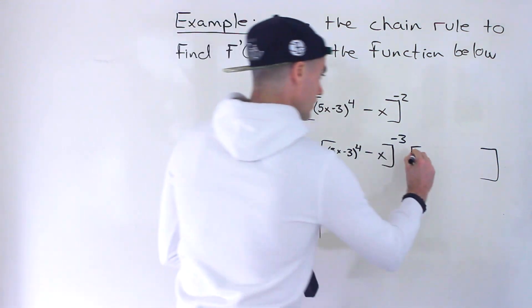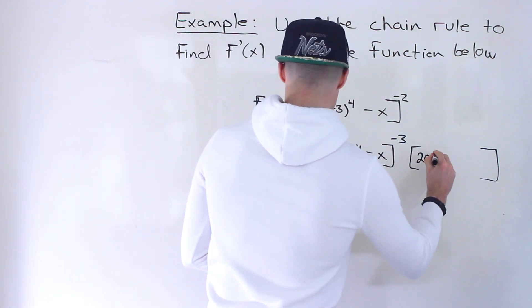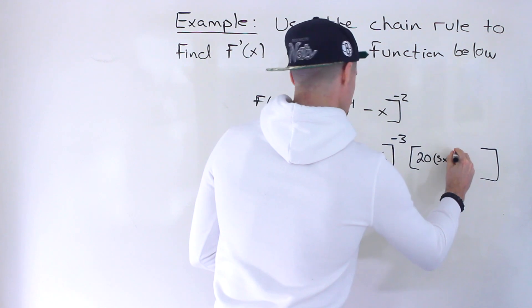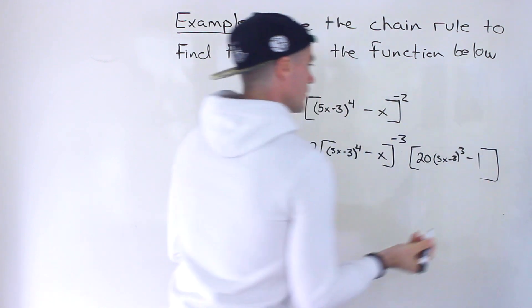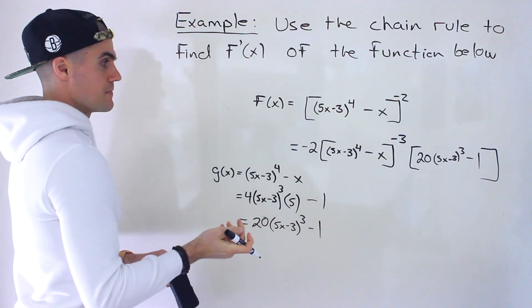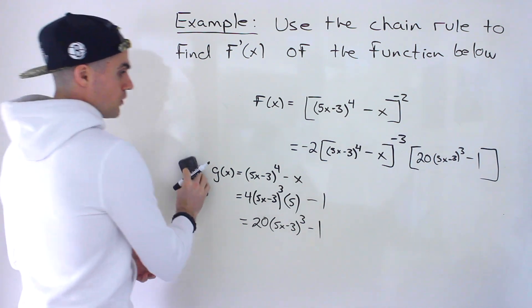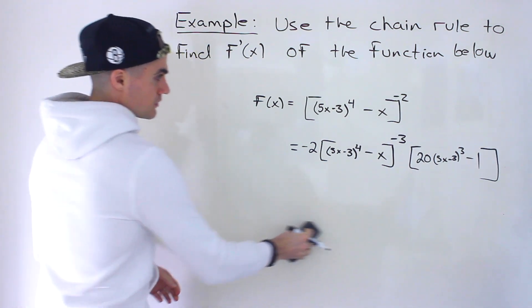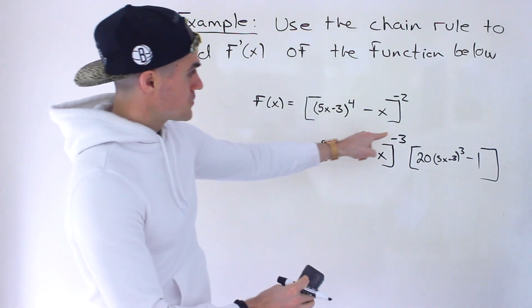So writing that over here, we'd have 20(5x - 3)^3 - 1, like that. And then what we can do, let's make this look a little nicer. Now let's bring, notice we have a negative exponent. So let's bring this down to the denominator.